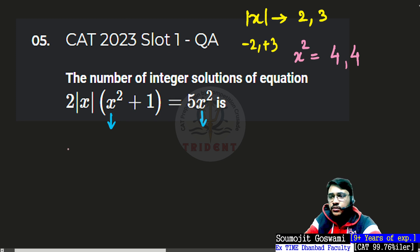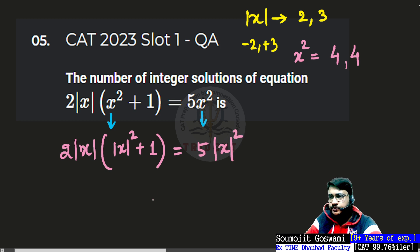So 2 mod x times mod x whole square plus 1 equals 5 mod x square. Obviously so many mod x. Am I deliberately making your life tough? No, at this point just do this: let mod of x as any other variable, let's get a t.